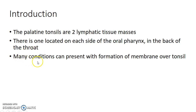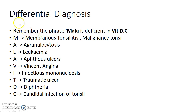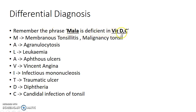Many conditions can present with formation of membrane over tonsil. Now let us see about the differential diagnosis of membrane over tonsil. In order to remember the various conditions causing the formation of membrane over tonsil, remember the phrase: 'MALA IS DEFICIENT IN VITAMIN DC.'